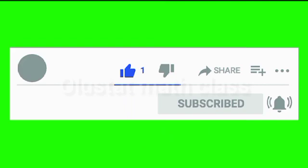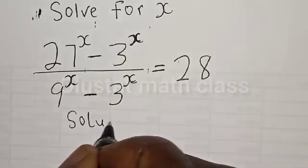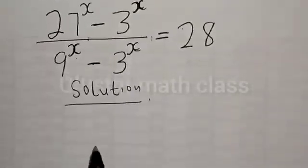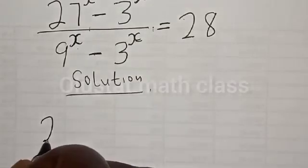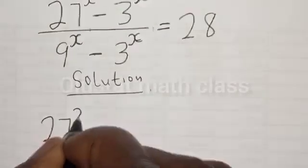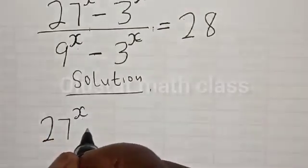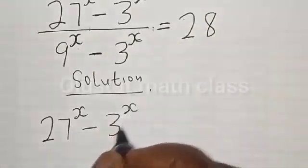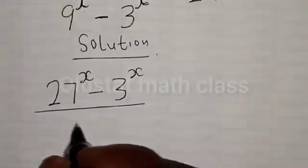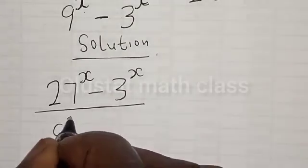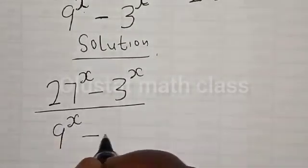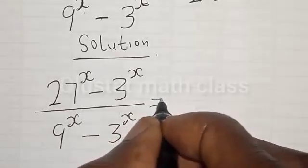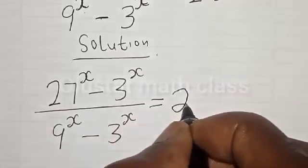Solution. We have the given equation: 27 raised to power s minus 3 raised to power s, divided by 9 raised to power s minus 3 raised to power s. 9 raised to power s is equal to 28.